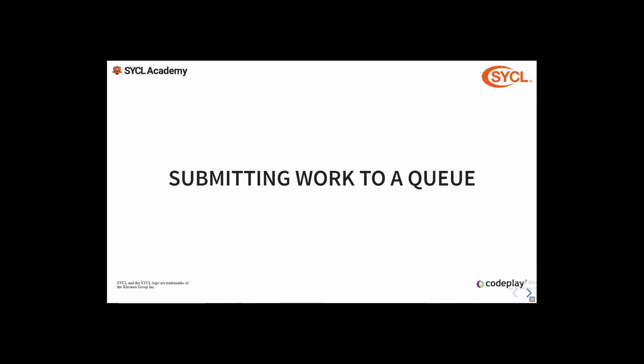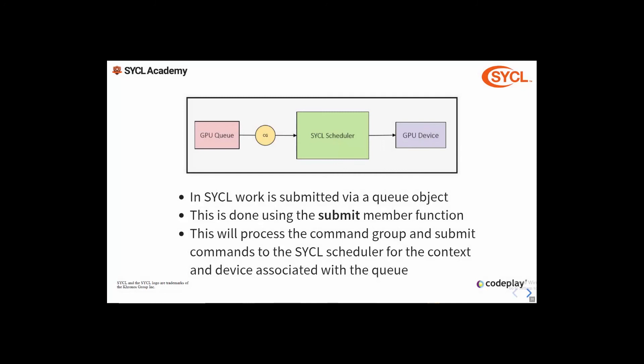So now that we have a queue, how do we submit work to it? In SYCL all work is submitted to a queue using the submit member function. This processes a command group and submits commands to the SYCL scheduler for the context and device associated with that queue. We submit a command group to the GPU queue where it is processed and submitted to the scheduler, and then once the scheduler decides to execute those commands they are enqueued to the target device.